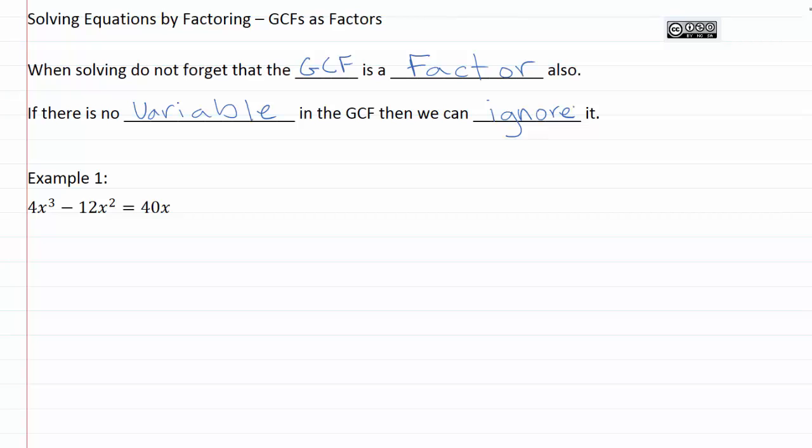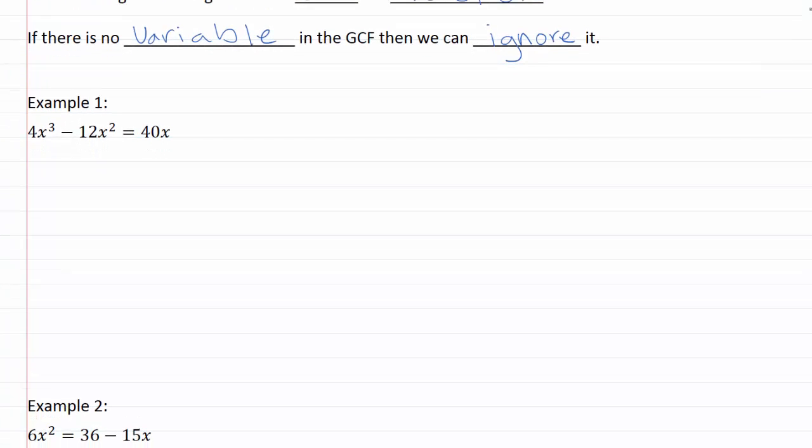So let's go ahead and look at this example one. So in example one we've got 4x³ - 12x² = 40x. So the first thing that I'm noticing here is that I really need to move everything over to one side of the equation and set it equal to zero, because there's stuff on both sides here.